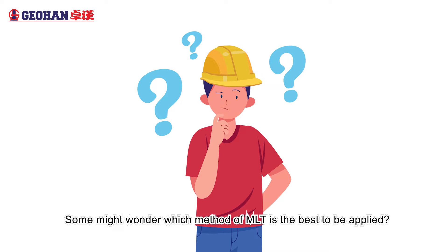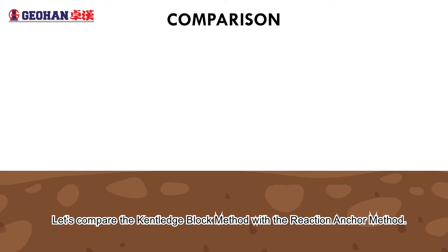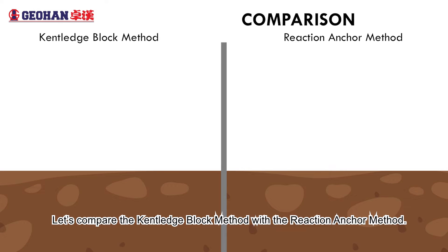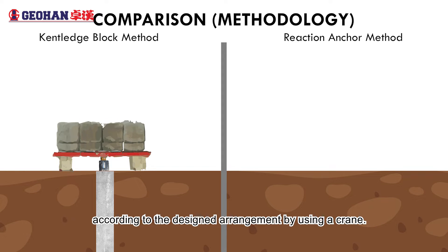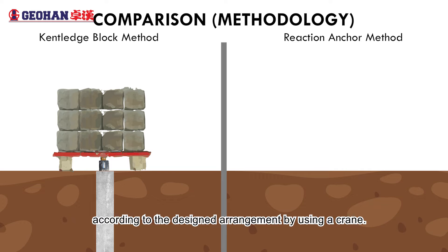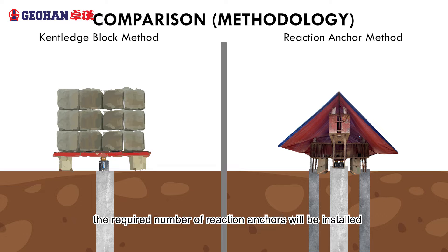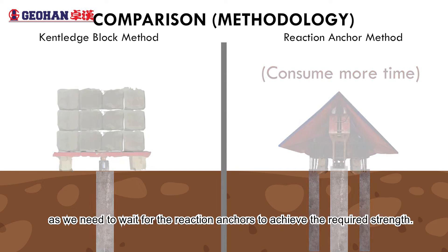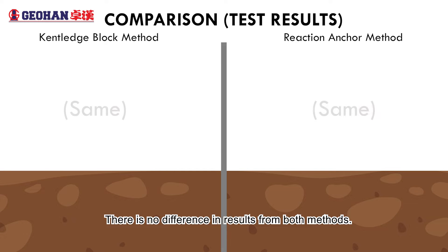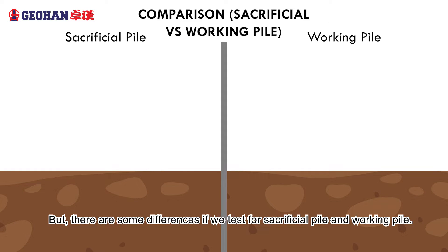Which method of MLT is the best to be applied? To answer this question, let's compare the cantilever blocks method with the reaction anchor method. For methodology, the cantilever block method requires arranging the blocks according to the design arrangement by using a crane. For the reaction anchor method, the required number of reaction anchors will be installed and stretched to the test beams, though it will consume more time as we need to wait for the anchors to achieve the required strength. There is no difference in results from both methods, but there are some differences when testing for sacrificial pile versus working pile.